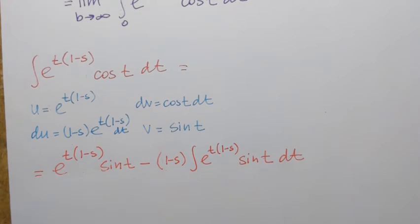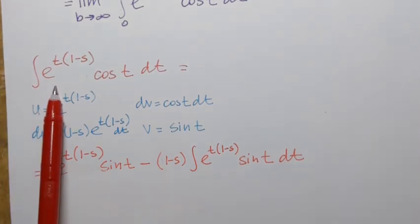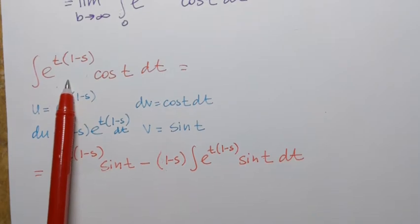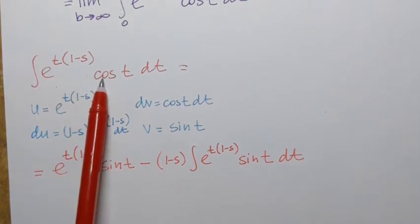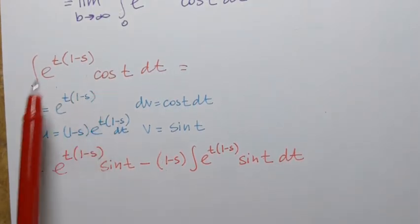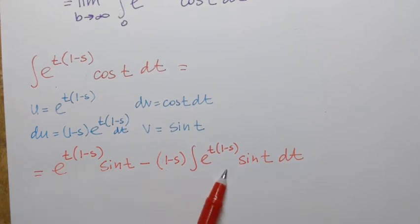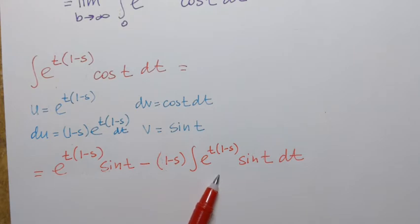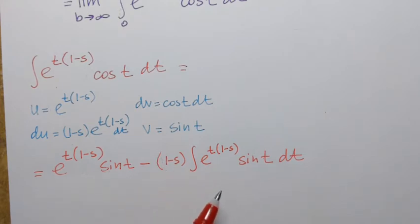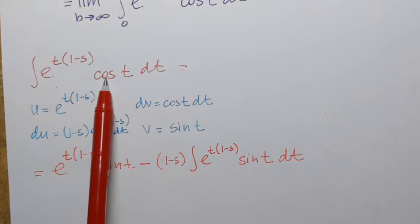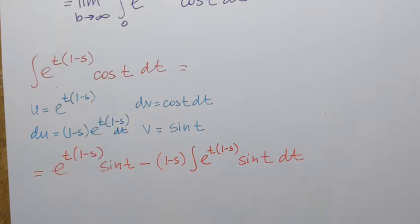We know from integration experience that whenever we have to integrate the product of an exponential function and a trigonometric function — sine or cosine — we will be going in circles. So now I have to integrate again, and it's going to be another integration by parts. Our goal is to come back to that same combination we started with, so it's just one more step.